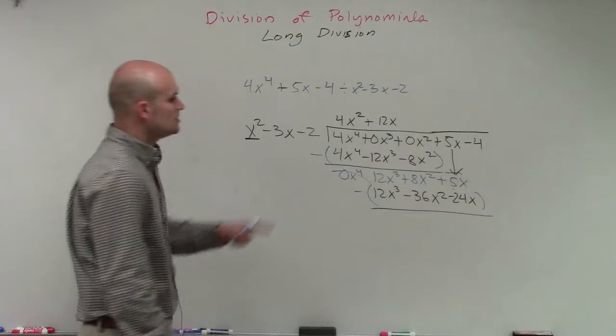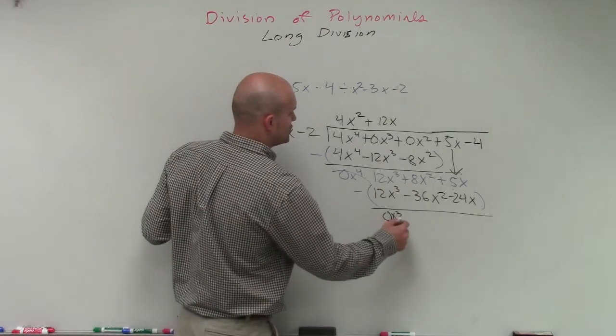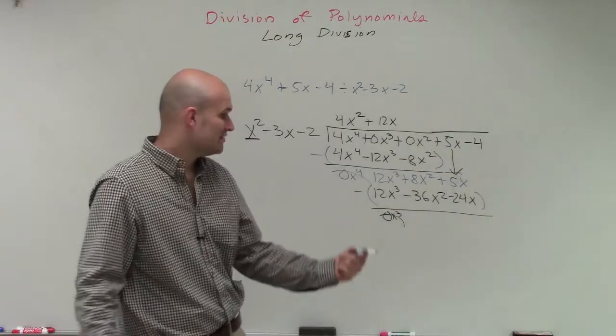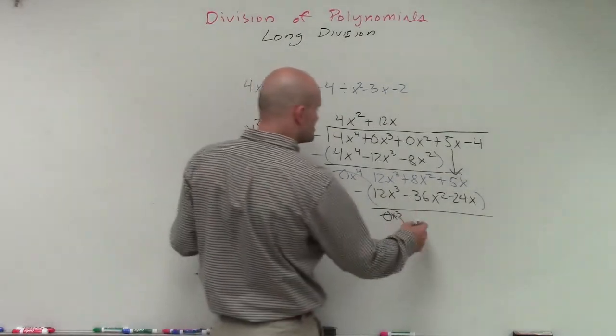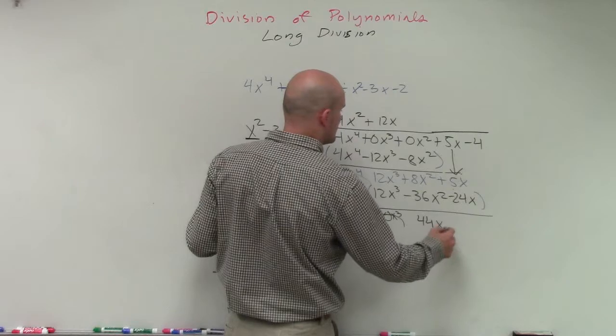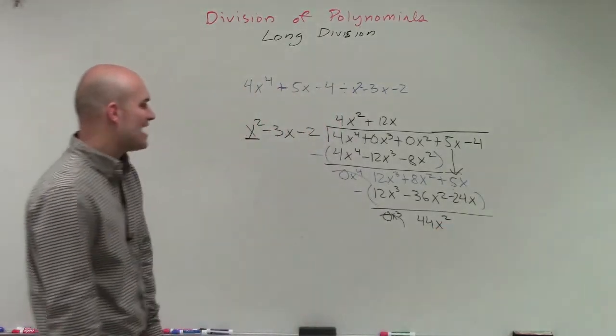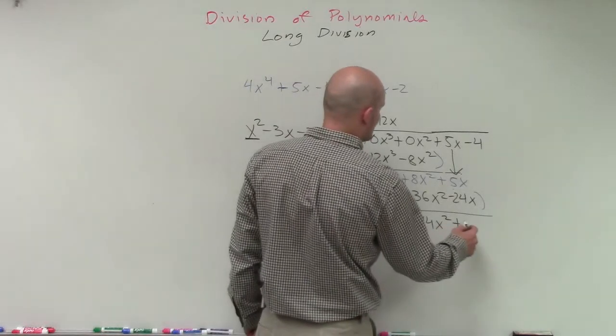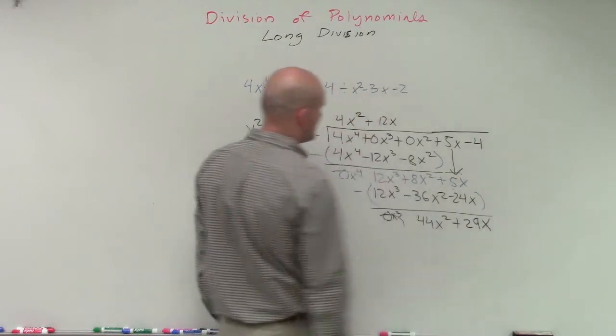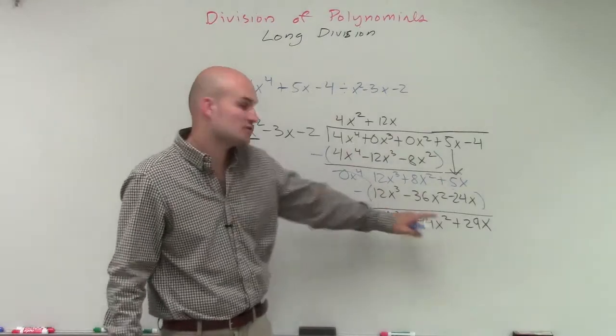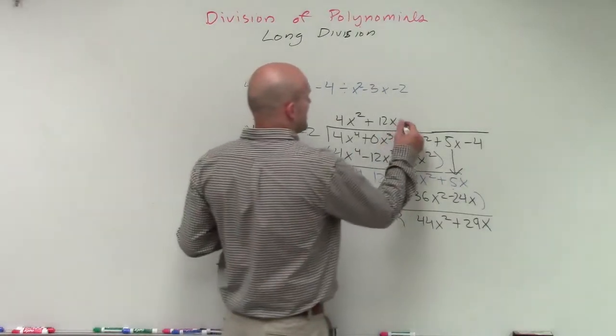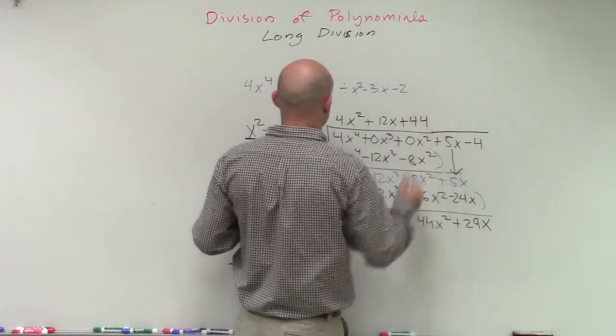OK. So 12x cubed minus 12x cubed is 0x cubed, which is just 0. 8x squared minus a negative 36x squared is going to be a positive 44x squared. And 5x minus a negative 24x is going to be a positive 29x. Now again, we're only taking our divisor and dividing into our first term. So x squared divides into 44x squared, a positive 44 times.